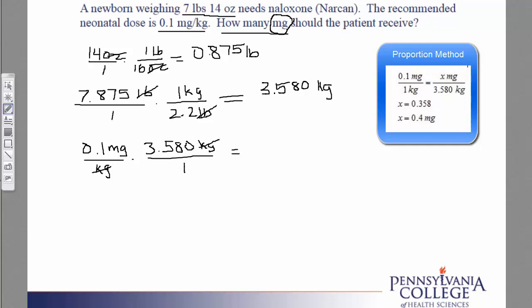And again, I go to my calculator. So I have 0.1 times 3.58, and I get my answer of 0.358. Now, this answer has a label of milligrams, and I can tell that from my work.